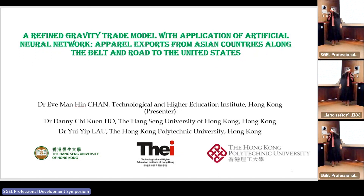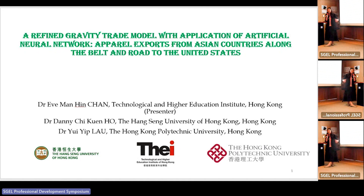Being the world's second largest apparel importer after the EU, how would US apparel trade be affected by China's Belt and Road Initiative? The second aim is to examine the changing pattern of apparel export from China to 15 neighboring countries, including South and Southeast Asian countries like Bangladesh, India, and Vietnam to the US under the BRI initiative.